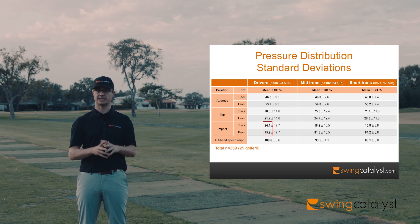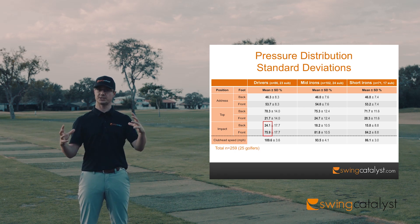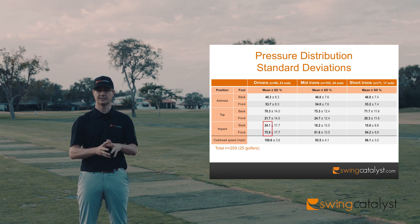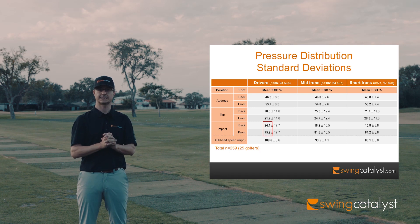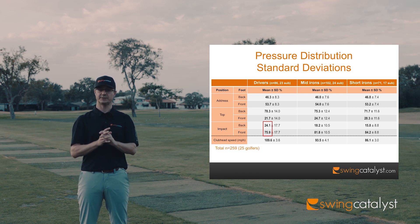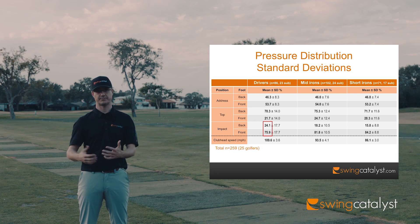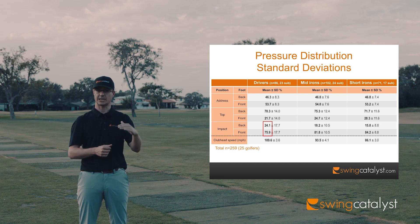We've taken 25 PGA Tour golfers and had them hit on average about 10 swings per golfer, giving us 259 swings total. We took the average pressures underneath each foot for the driver, the mid iron, and the short iron. Front foot would be your lead foot, back foot would be your trail foot, and we have it at address, the top of the backswing, and at impact.